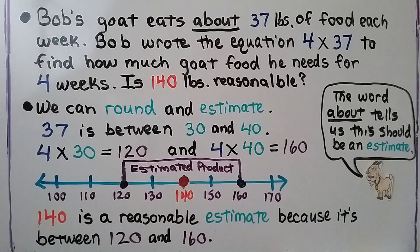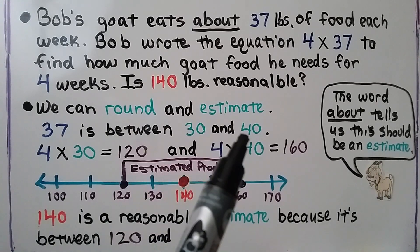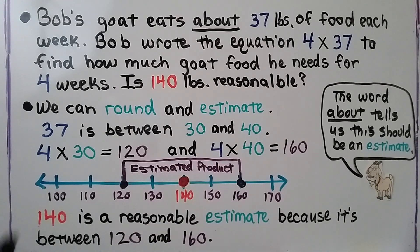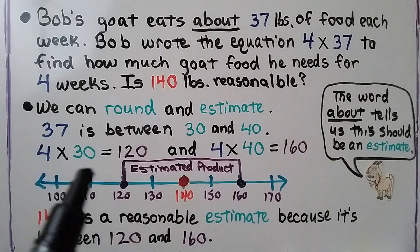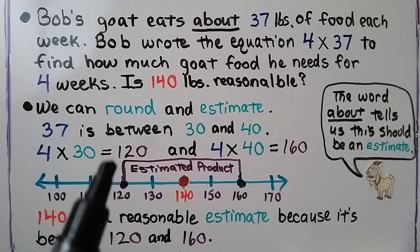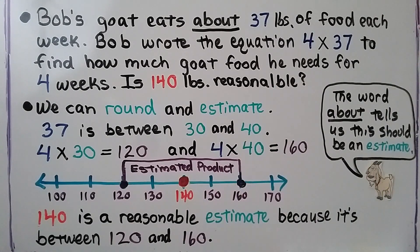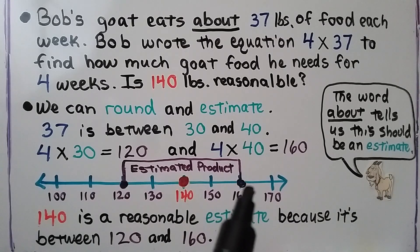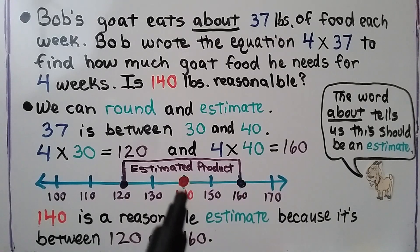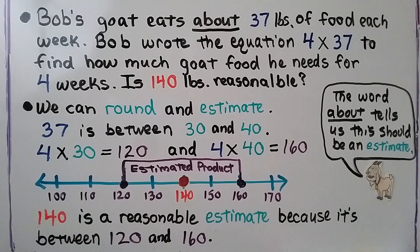We can round and estimate. 37 is between 30 and 40. If we multiply 4 times 30, it equals 120. And 4 times 40 equals 160. Here's 120 and here's 160 — 140 is right in the middle. So 140 is a reasonable estimate because it's between 120 and 160.